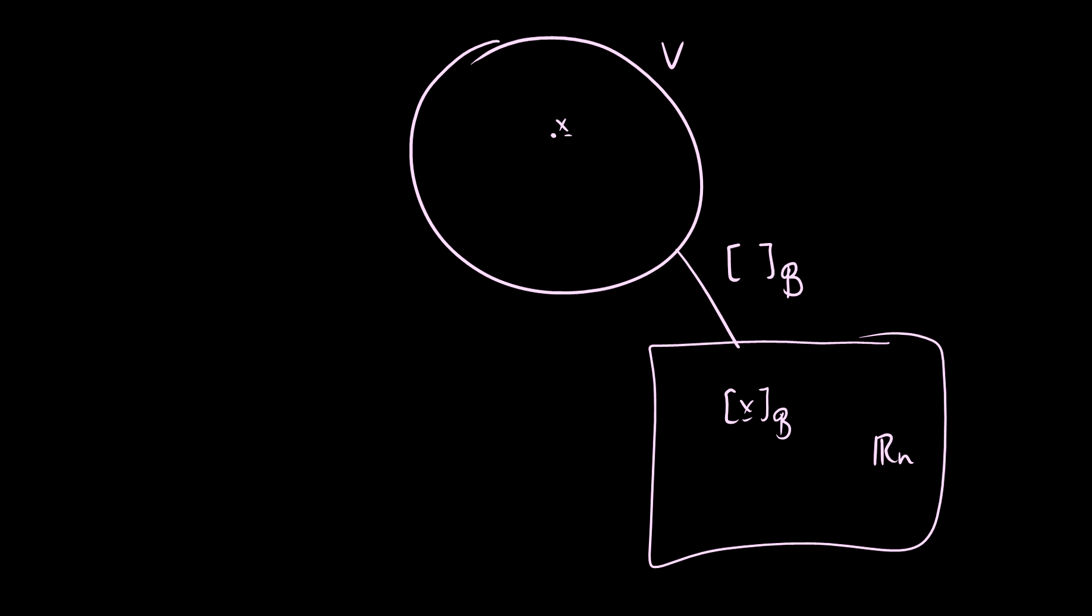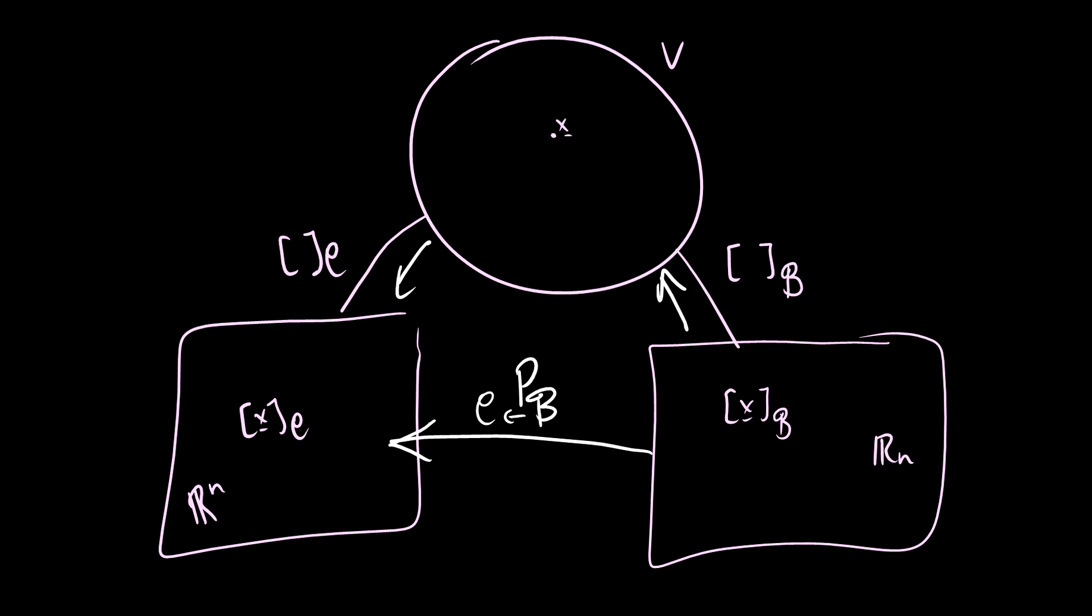Okay, so now what we're doing is we can say, well, we can also go to a different space here by some transformation relative to a basis C. And then we'll get some vector x relative to C here, and this is also going to be an Rn. So what we can do now is we can, instead of having to go back to the vector space V, then to the basis C, we can just go straight by taking the change of basis matrix B to C.